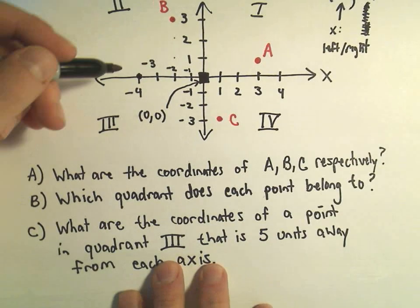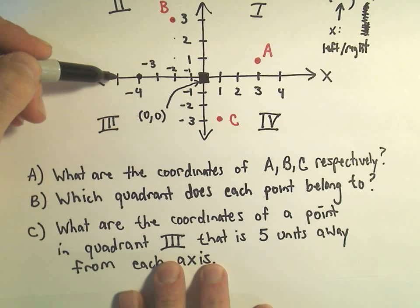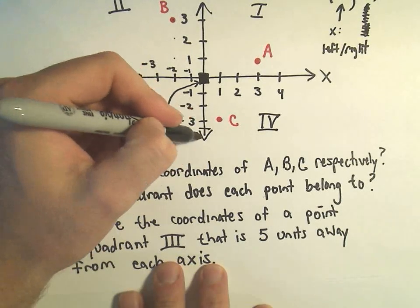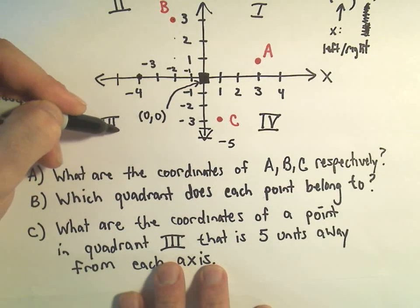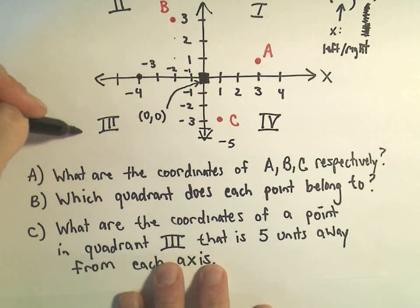Since it's going to be 5 units away, to be 5 units away from the x axis, I would have to go down, I would have to go 5 units down. Somewhere 5 units down.